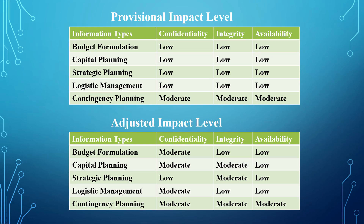For contingency planning, confidentiality remains moderate, integrity remains moderate, and availability remains moderate. You also have to go back and adjust your rationale for determining that confidentiality for budget formulation is now moderate as against low, and adjust your rationale for capital planning confidentiality and integrity, and for strategic planning integrity being moderate.